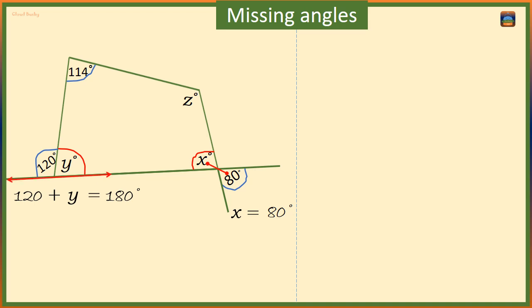So y is equal to 180 degrees minus 120 degrees, which is 60 degrees. Now x is 80 degrees, y is 60 degrees, we still have to find z.